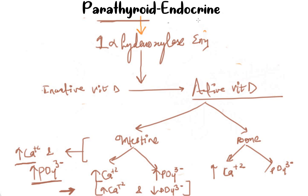So the take-home point is that PTH increases calcium in the blood and decreases phosphate in the blood. This is all about the parathyroid hormone. I hope you have understood the concept. For more videos like this, please subscribe to my YouTube channel. Thank you.